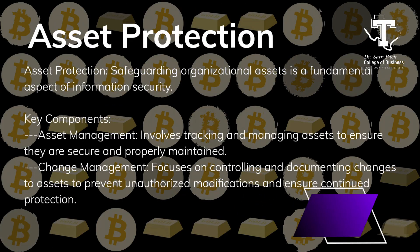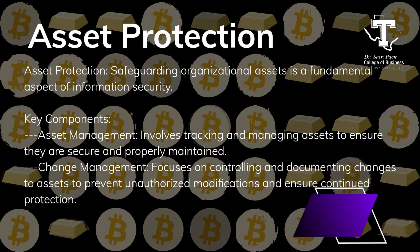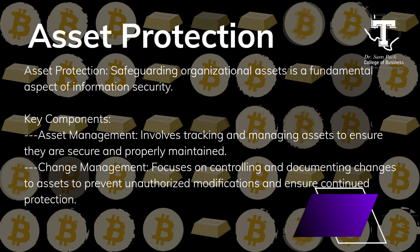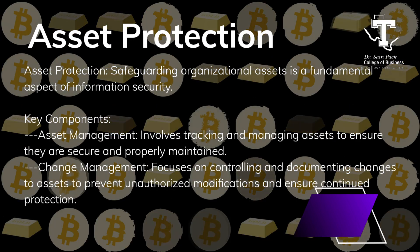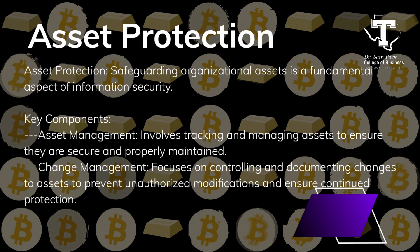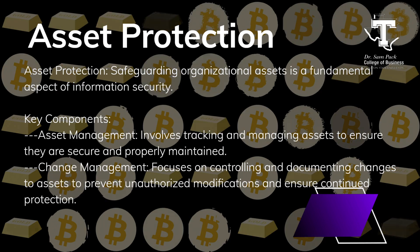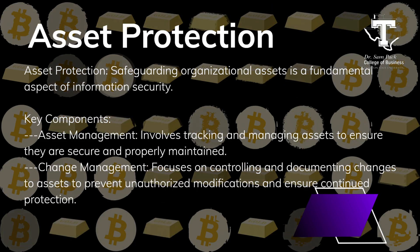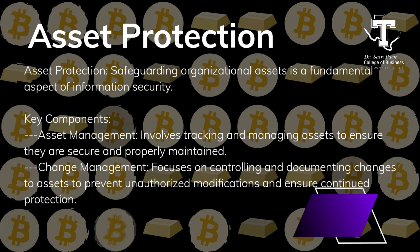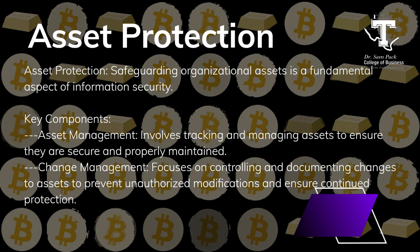Let's dive into the first big topic: asset protection. Protecting assets is really at the heart of information security. It's all about making sure your organization's valuable resources — whether they're data, hardware, or software — are kept safe from any potential threats or damage. Asset protection involves two main components. Asset management: knowing what you have, keeping a detailed inventory of all your assets, understanding their value, and knowing where they're located. And change management: as things evolve through updates, upgrades, or changes in how your assets are used, you need a solid process to manage these changes, ensuring that modifications don't inadvertently introduce new risks or vulnerabilities.